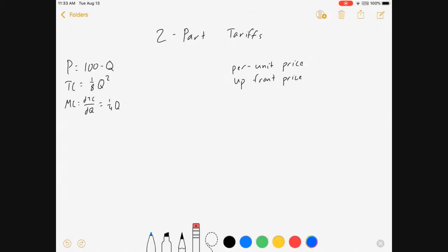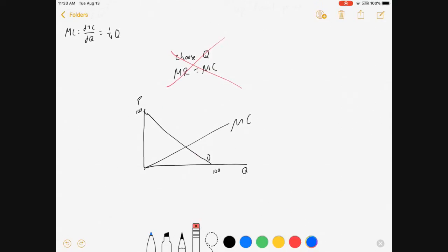Traditionally, if they were a single price monopoly, we'd choose Q by setting marginal revenue equal to marginal cost. We're not going to do that here. We're not trying to choose one price, we're choosing two, so that approach is wrong.